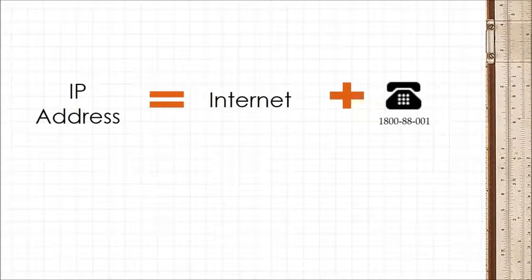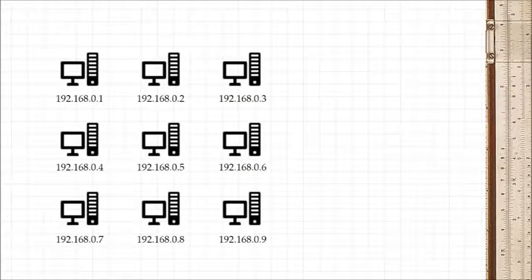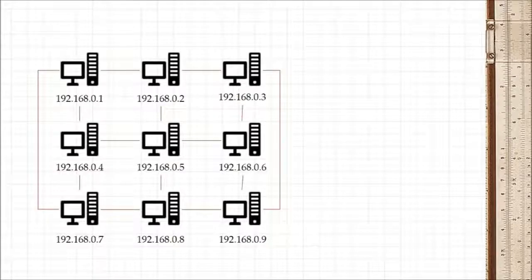Just like how every phone in the network has a unique phone number, every computer on the internet has a unique internet number or IP address. And this allows every other computer on the internet to communicate with it.